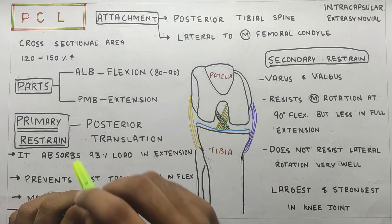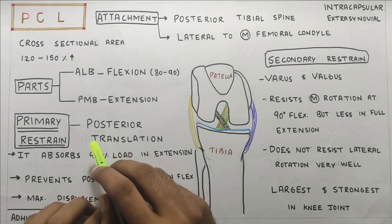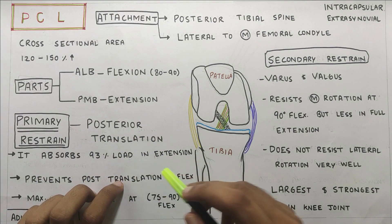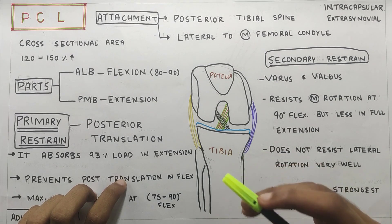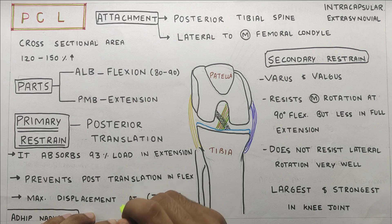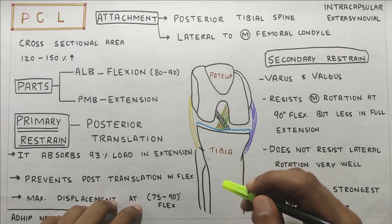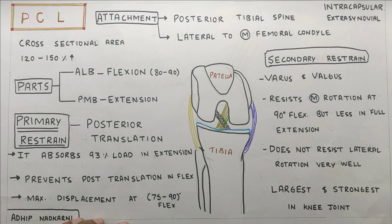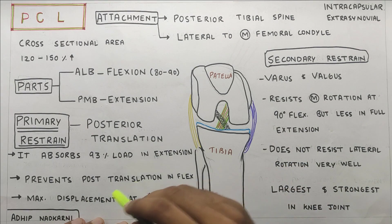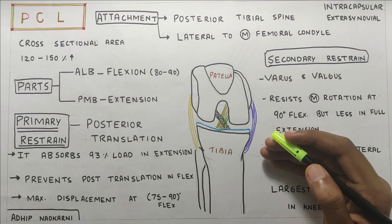The primary restraint provided by the PCL ligament is against posterior translation. It absorbs 93% of the load when the knee is in hyperextension or full extension. PCL also prevents posterior translation when the knee is flexed, and maximum posterior translation of the tibia occurs at 75 to 90 degrees of flexion. From this we know that PCL is most effective at preventing posterior translation at greater degrees of flexion, i.e. in deep flexion.